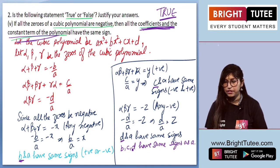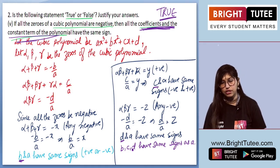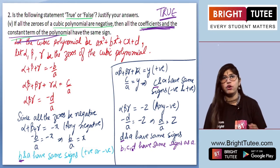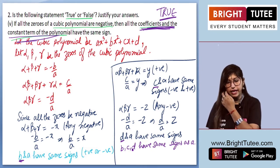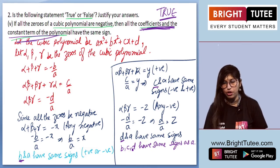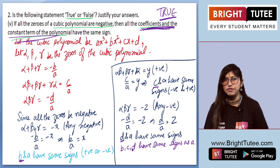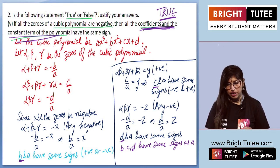Therefore, a, b, c are the coefficients and d is the constant term, and they all have the same sign. So we can straight away write the answer as TRUE, because all the coefficients and the constant term of the polynomial have the same sign when all the zeros of the cubic polynomial are negative.